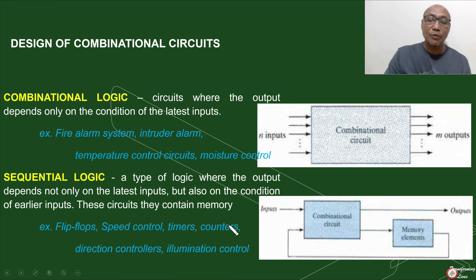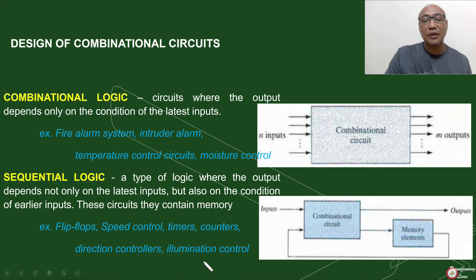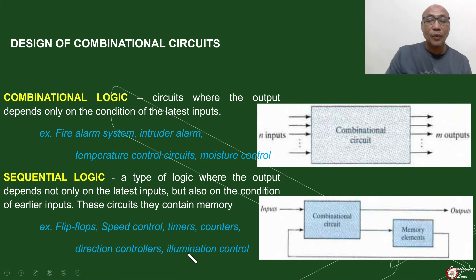For example, if we want to count 0 to 10, we start with 0, 1, 2, 3, and we know what will be next after 3, and that will be 4, etc. Illumination control could also be an example of a sequential circuit because in illumination control, what do we want to do? We want to increase illumination or to decrease illumination. For you to increase or decrease illumination, we have to determine what is the state of the illumination of the room.